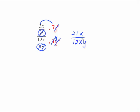Now we need to do a little more simplifying — just because we've done this does not mean we're automatically finished. I notice there's an x in the top and an x in the bottom, so I can cancel those out. And with 21 and 12, I can divide top and bottom by 3, giving 7 in the top and 4y in the denominator.